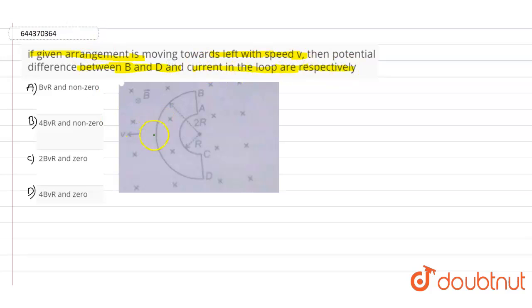...he has given. So he is saying that whenever this particular object is moving towards the left side with some speed of v in the magnetic field, he is asking us to find the potential difference at D point and in the B point, and also is asking us to find the current in the loop.